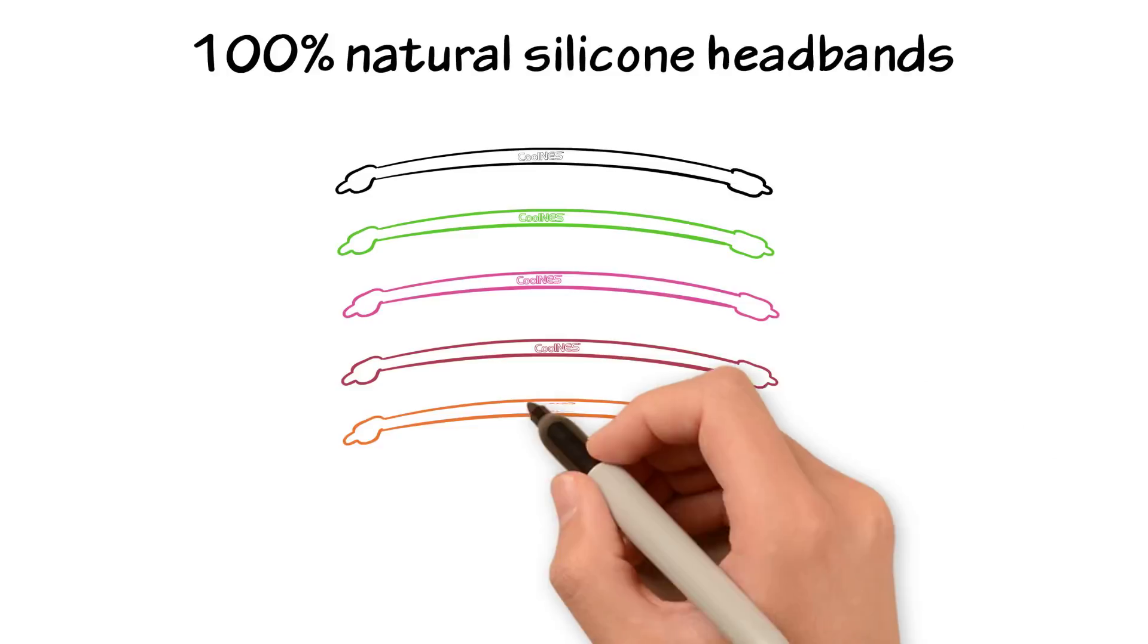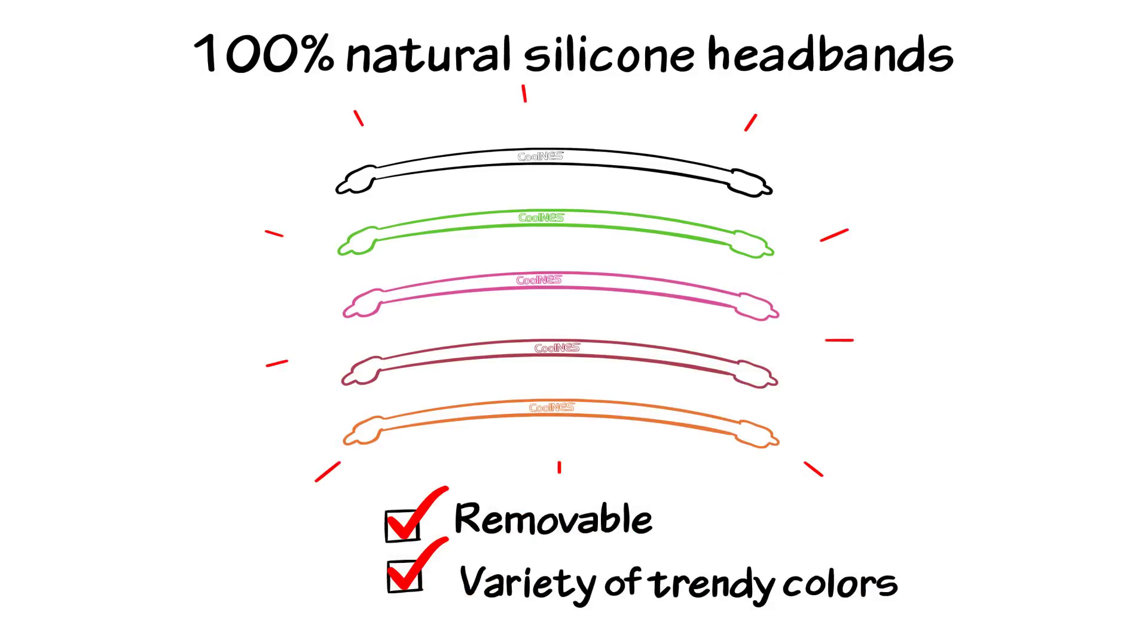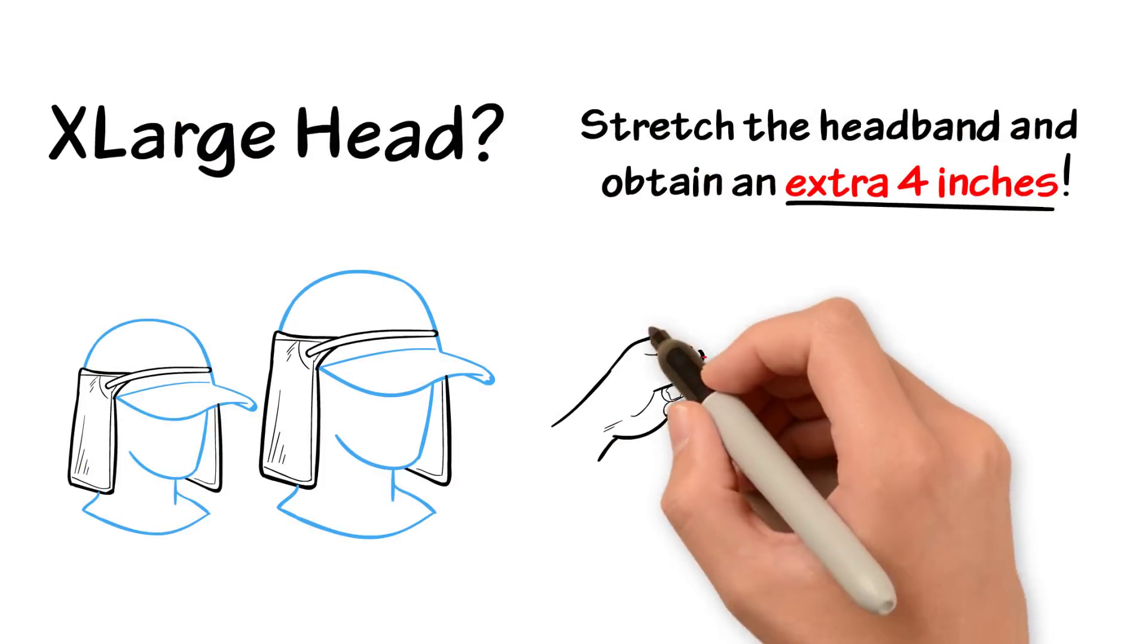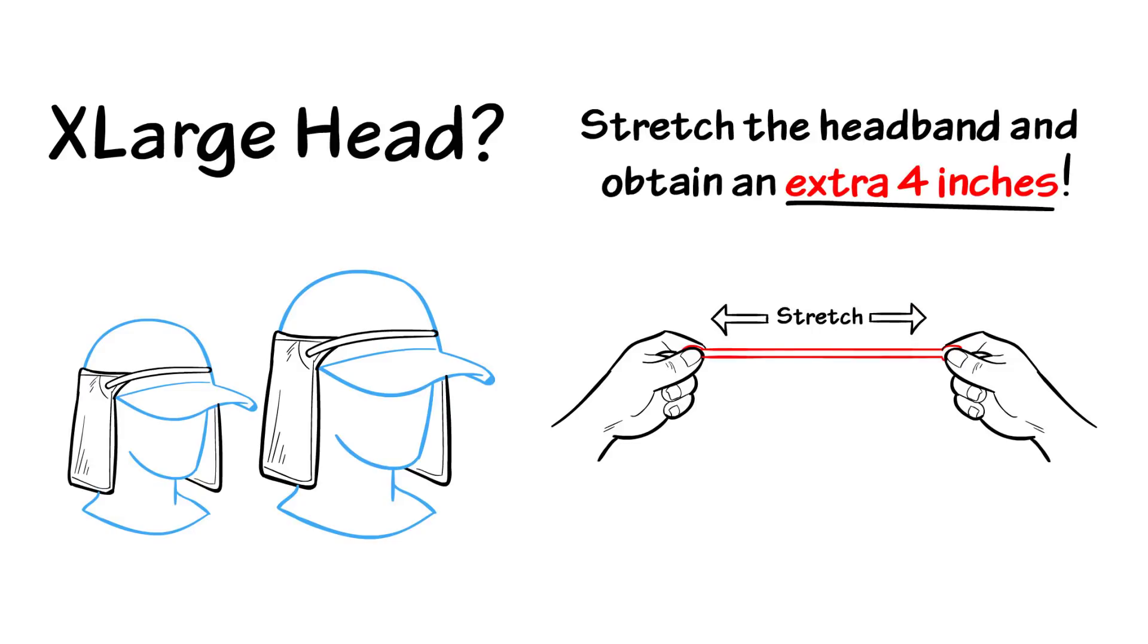The 100% natural silicone headbands are removable and come in a variety of cool trendy colors. Have an extra large head? Make sure to follow the instructions, stretch the headband, and obtain an extra four inches.